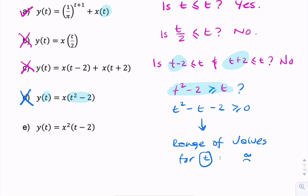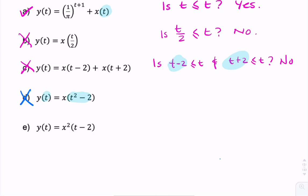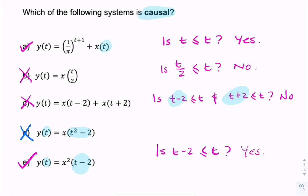Now let's look at e. Again, we're interested only in the argument, which is t minus 2. Is t minus 2 always less than or equal to t? The answer is yes, and therefore this is a causal system. So by going through these one by one and only looking at the bits that matter, we can determine if these systems are causal or not. We only ask ourselves one question: whether the bit in brackets is always less than or equal to t. This is for continuous time signals; for discrete time signals, we would ask the same question of n.